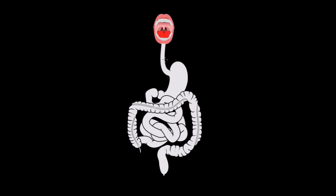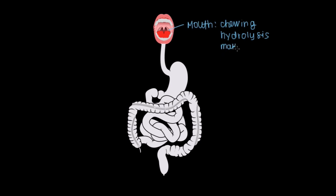Starting off, the first place our food is ever going to go is our mouth, or the oral cavity. The main functions achieved in the mouth include chewing — the morselation of food — and also very important is hydrolysis, which is the enzyme-assisted breakdown of food. Where chewing is the physical breakdown, hydrolysis is the enzymatic digestion. The overall goal here is to make what's called a bolus, just a sphere of digested food that can then be swallowed and passed on to our next structure.